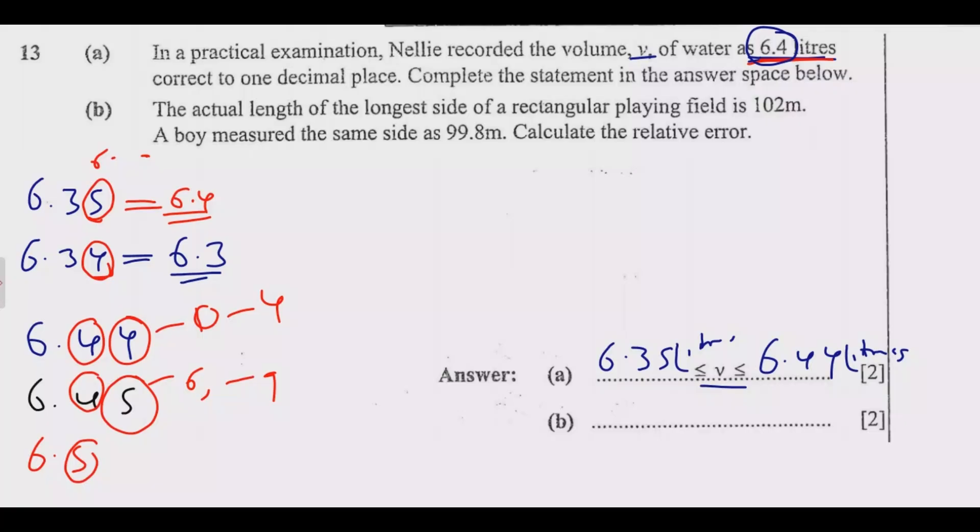Question B. The actual length of the longest side of a rectangular plane field is 102 meters. Boye measured the same side as 99.8 meters. Calculate the relative error. We are looking for the relative error in this case.